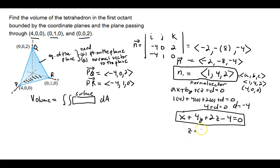If we solve for Z real fast, it would be 4 minus X minus 4Y all divided by 2. So that is 2 minus half of X minus 2Y.